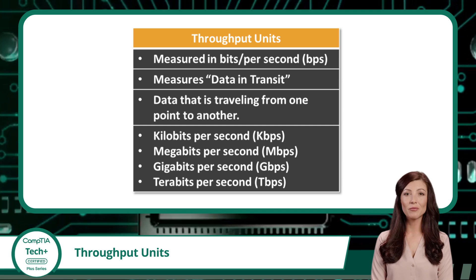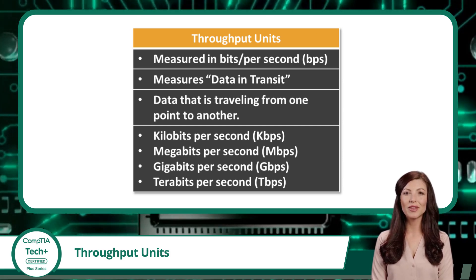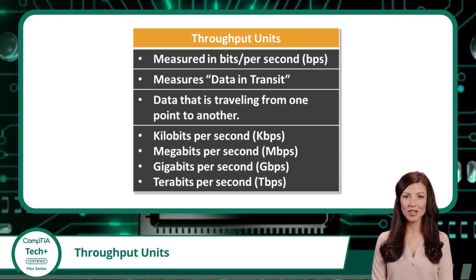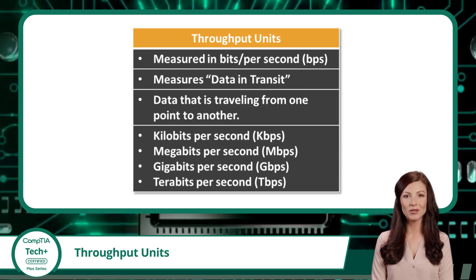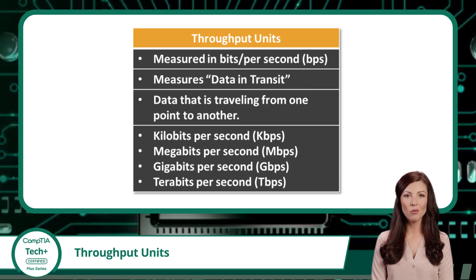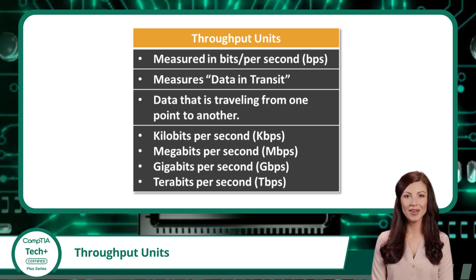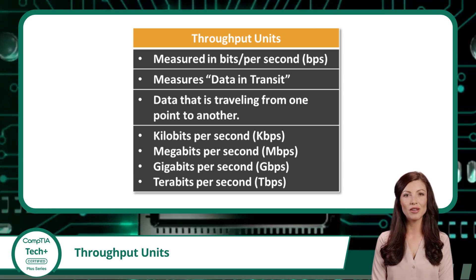The throughput unit, bits per second, can measure any digital data that is traveling from one point to another. This includes measuring the speed of network connections between computing devices or internal connections between computing components. Anytime you have data on the move, the preferred unit of measure will be bits per second. As a couple bits is not even enough to store a single character of data, we will have to deal in much larger quantities of bits to meet today's demands.